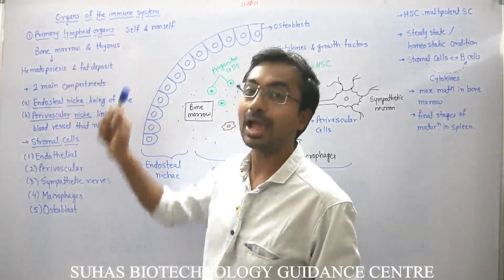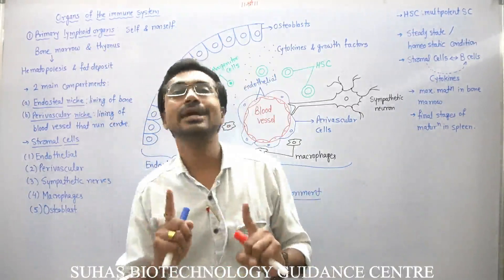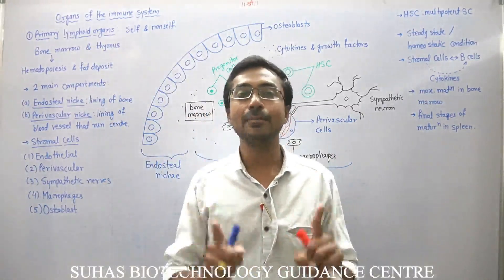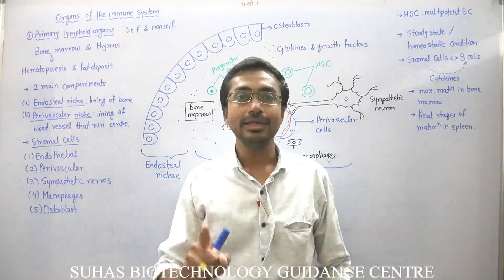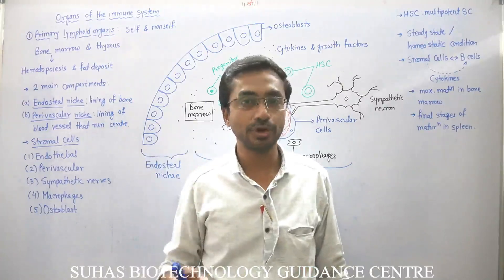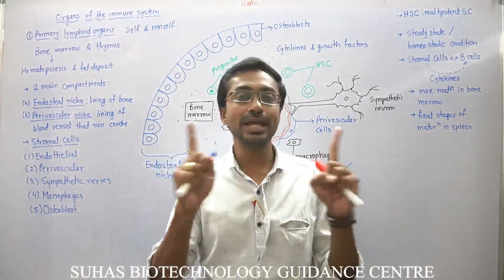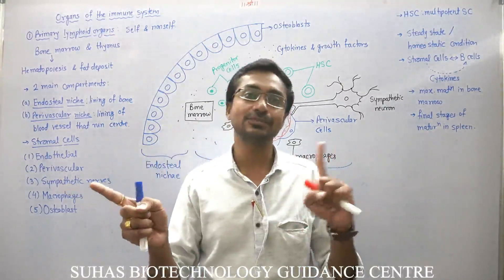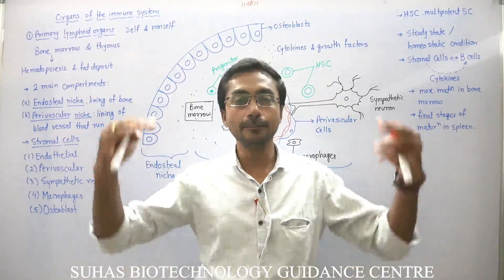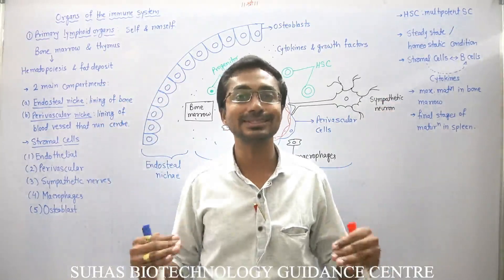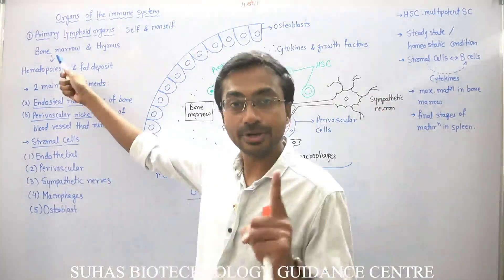The very first primary lymphoid organ is bone marrow; other than that, thymus is also a primary lymphoid organ. Inside the bone marrow there is hematopoietic stem cell, and in the last lecture on hematopoiesis we saw how the hematopoietic stem cell gives rise to myeloid progenitor as well as lymphoid progenitor, from which all the cells of blood are synthesized.